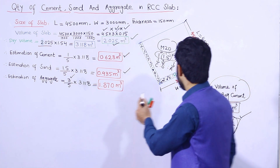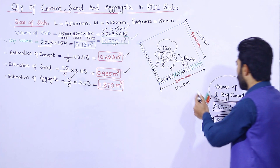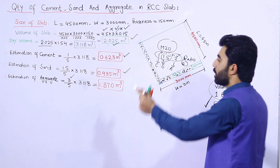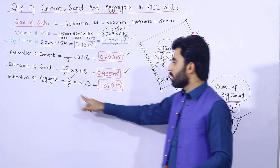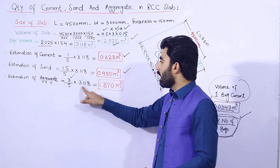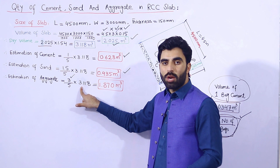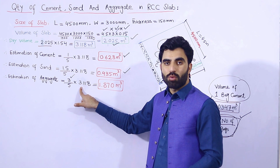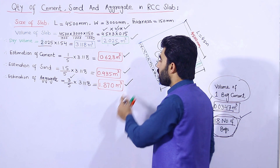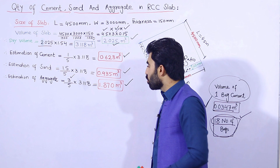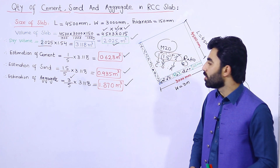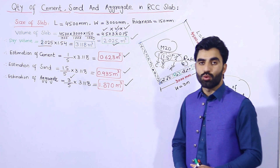Next, the estimation of aggregate: the aggregate ratio is 3, so (3/5) × dry volume = (3/5) × 3.118. This gives a total volume of aggregate of 1.870 cubic meters.